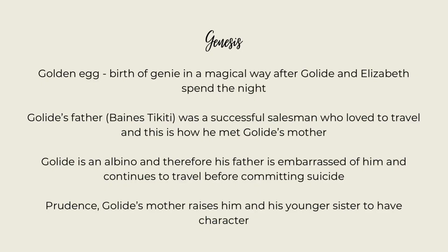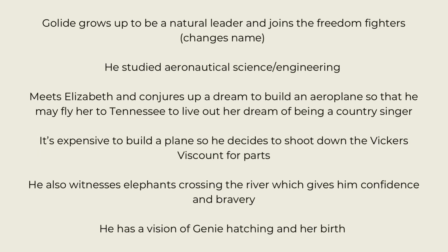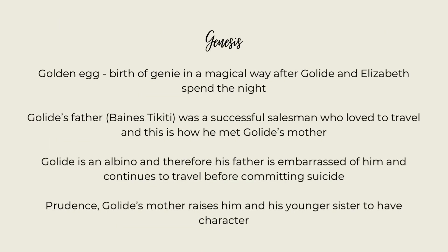We are also shown Golida's father, Baines Takiti, who is a successful businessman and loved to travel. That is how he met Golida's mother — she was the only one who could resist his charm. Golida is an albino, and therefore his father is embarrassed of him and continues to travel before committing suicide by walking into the ocean.